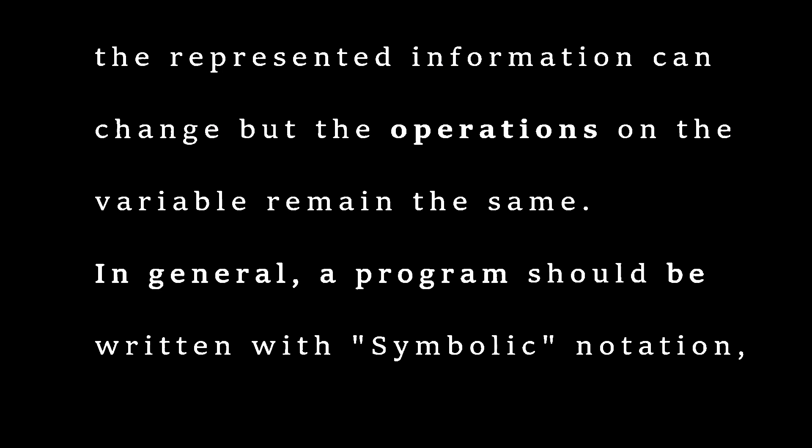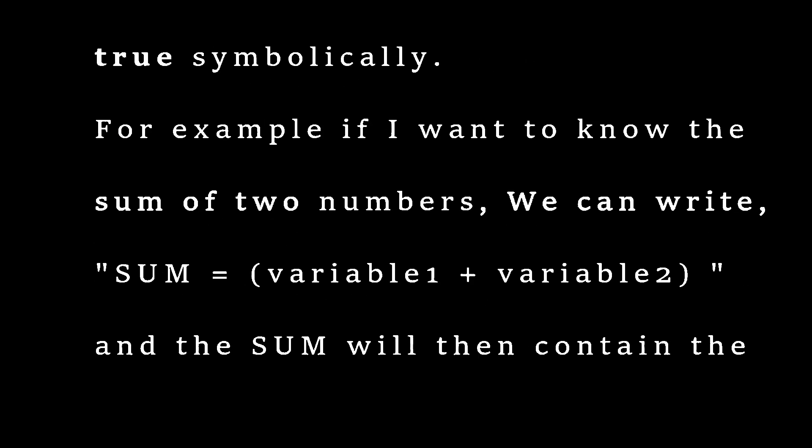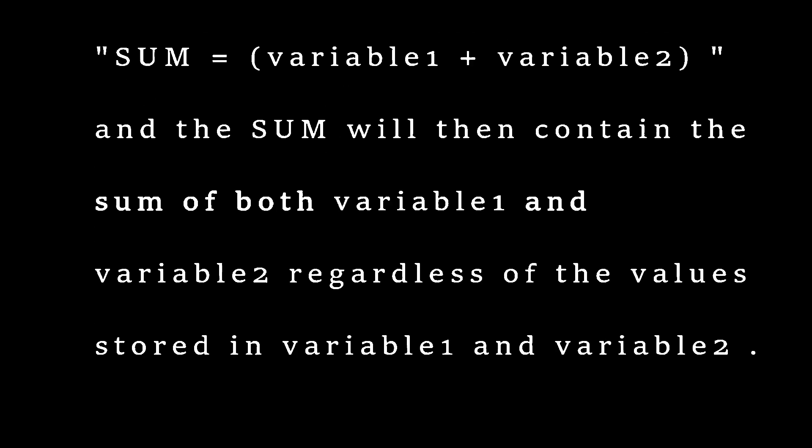In general, a program should be written with symbolic notation, such that a statement is always true symbolically. For example, if I want to know the sum of two numbers, we can write: sum equals variable one plus variable two. The sum will then contain the sum of both variable one and variable two, regardless of the value stored in variable one and variable two.